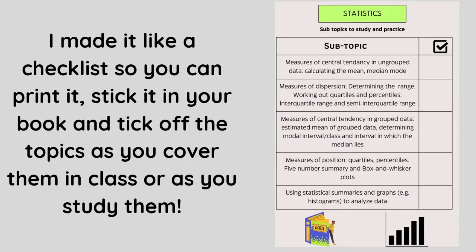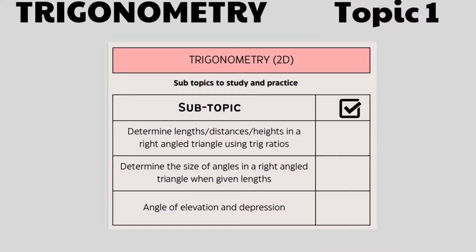Let's jump into topic number 1, which is trigonometry. Now, trigonometry was already covered this year, but the ATPs specifically state that in term 3, you're going to be focusing on trigonometry and 2D questions or 2D problems. Basically, this is when they give you a right angle triangle, they may give you lengths of some sides, they may give you some angles and they want you to determine the lengths or the heights or the distances in a right angle triangle using trig ratios or you will be expected to determine the size of angles in a right angle triangle. It's basically using concepts that you already learned but applying it to 2D problems. You will also be working with angle of elevation and depression.